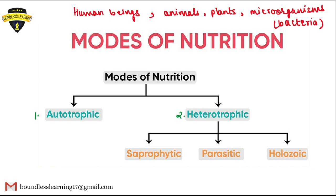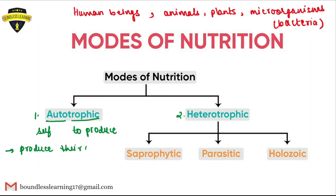If we break down the word 'autotrophic,' we get 'auto,' meaning self, and 'trophic,' meaning to produce or to form. So autotrophs are organisms that produce their own food. The classic example is plants — they prepare their own food, so they are autotrophs.